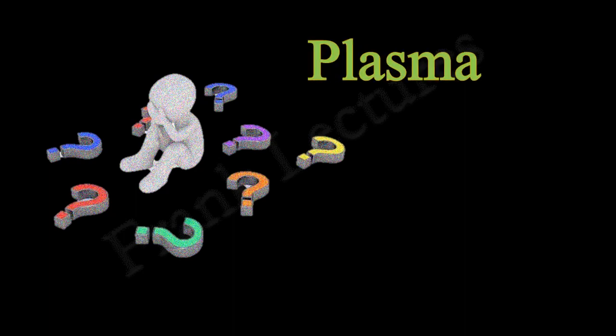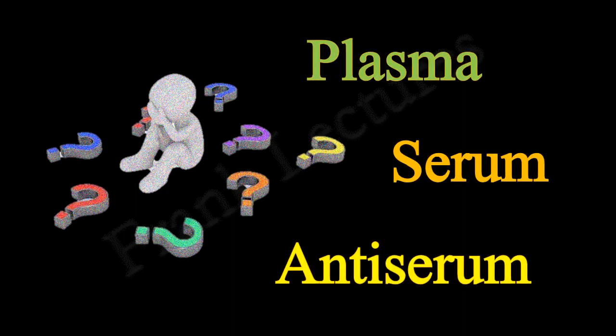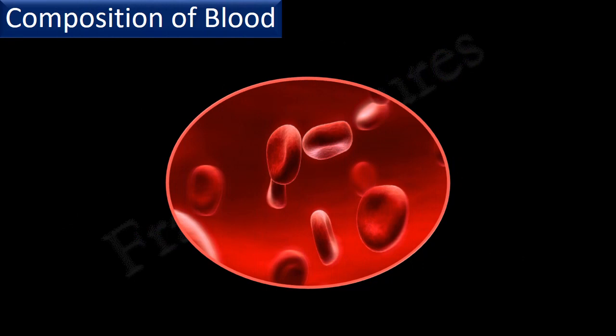In this video lecture, we will describe three most confusing terms often used in immunology. These terms are plasma, serum, and anti-serum. To understand these terms, we should have knowledge about the composition of the blood. Let's describe blood and its components in brief.